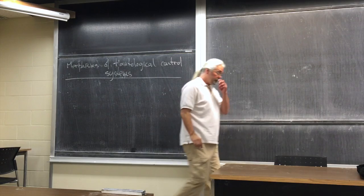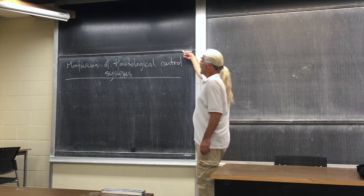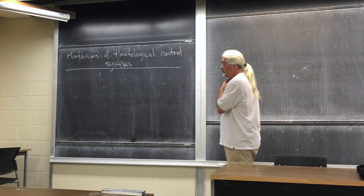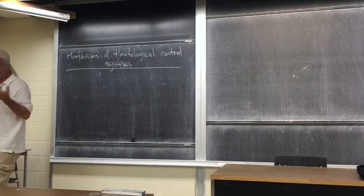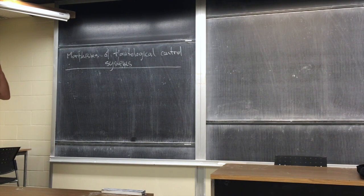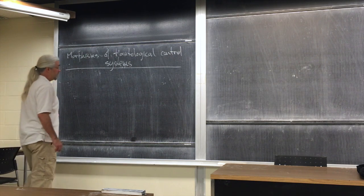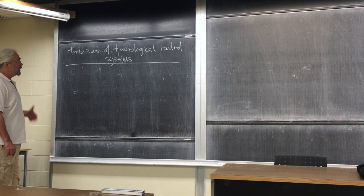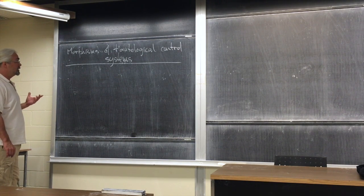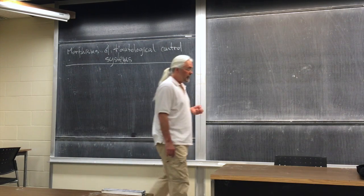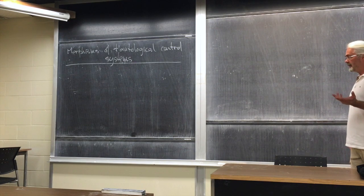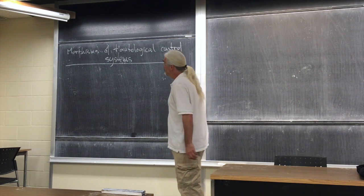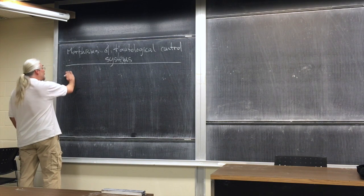Today we'll talk about two things. The first is what I'll call morphisms of tautological control systems — a way of mapping between tautological control systems in a natural way. The naturality embraces the two features of the definition: the emphasis on locally convex topologies for spaces of vector fields, and the sheaf part of the definition where vector fields are defined only on open subsets of the manifold.